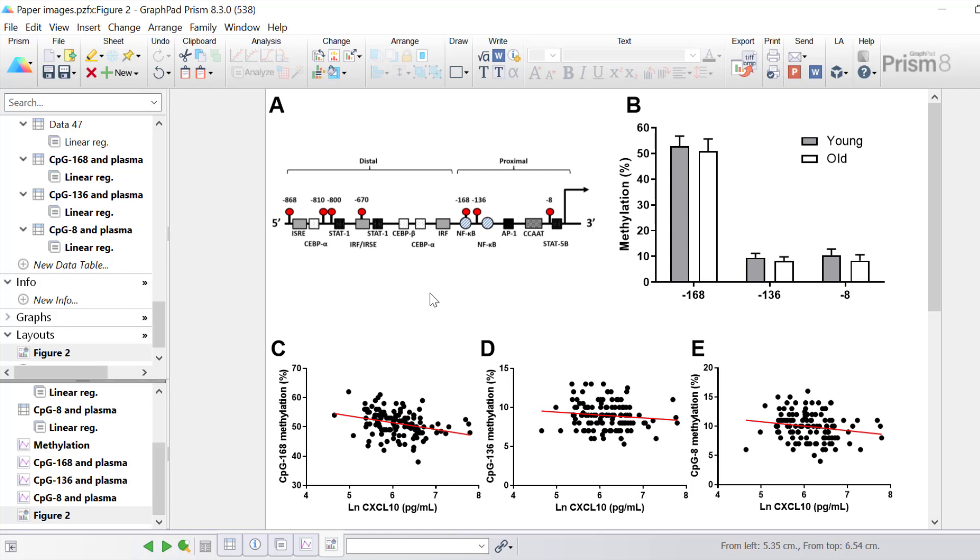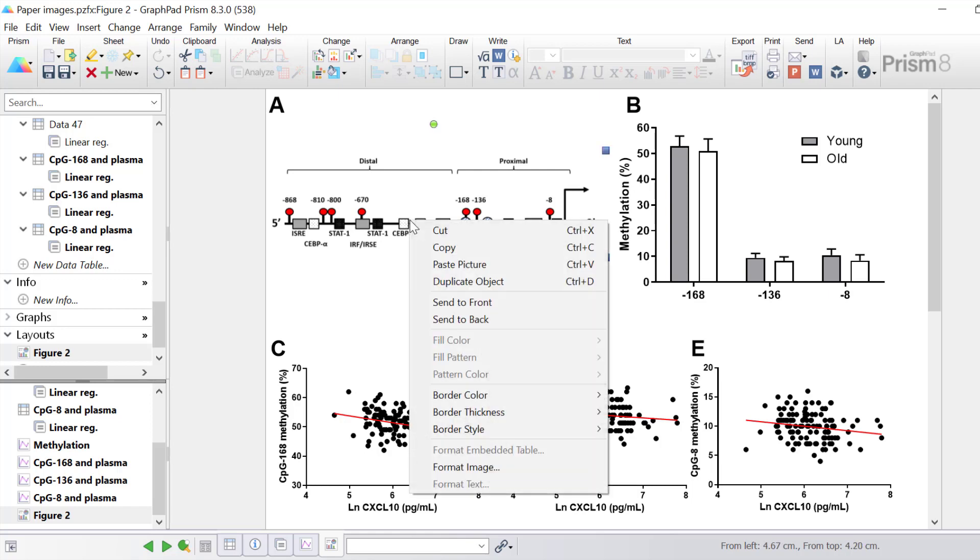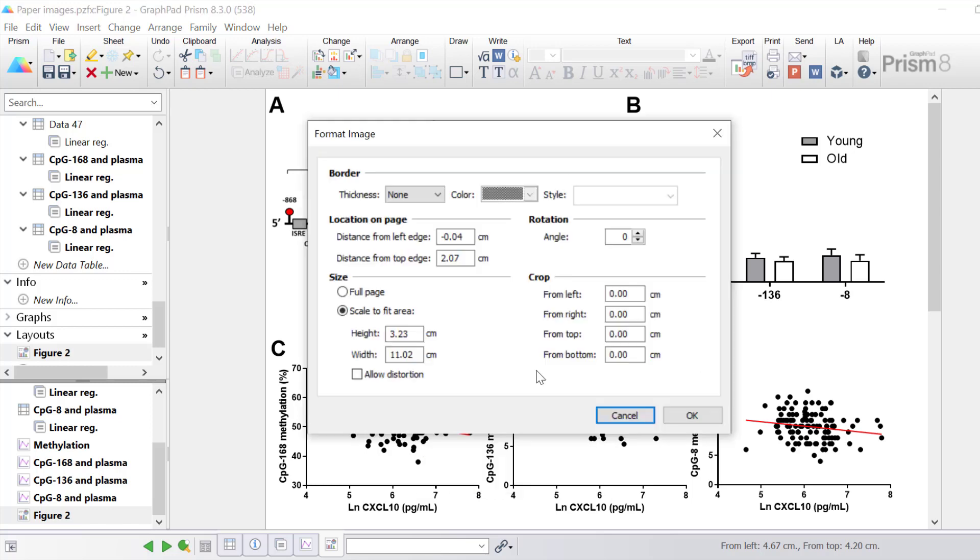If you prefer you can actually type in the desired size of the image, the rotation angle and any cropping. To do this simply right click on the picture and then go to format image. A new dialog box will open and here you can fine tune the appearance of the image. For example you can give the image a border and you can change the thickness, the color and the style of that border. You can specify where on the page the image is going to be and you can enter this in centimeters. Instead of using the click and drag rotation tool you can actually enter a rotation angle if you want to fine tune this angle further.